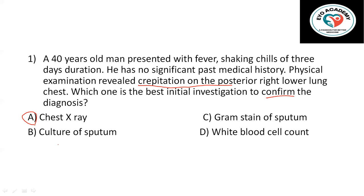White blood cell count: you may find elevated WBC or leukocytosis in this patient, but it is not confirmatory. It can help narrow the differential diagnosis, but it does not confirm the diagnosis. Because there is fever and pneumonia may be caused by infection, we may find elevated WBC — but it is not confirmatory. Chest X-ray is the best initial investigation to confirm the diagnosis for this particular patient, as it can rule in or rule out many diagnoses.